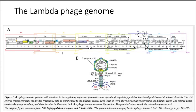Let's take a look at a phage genome, for example, the E. coli lambda phage. It has many genes here which are shown as little boxes. Let's take a look at three of them: C, D, and E.